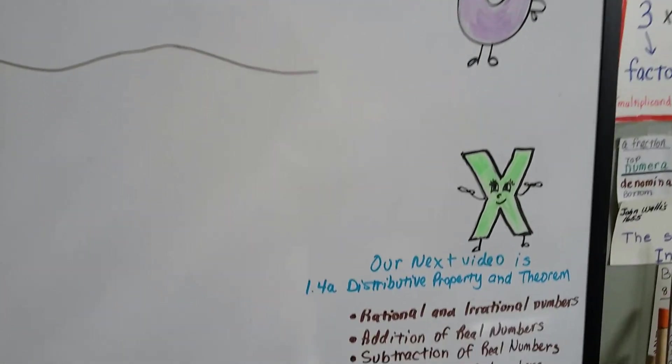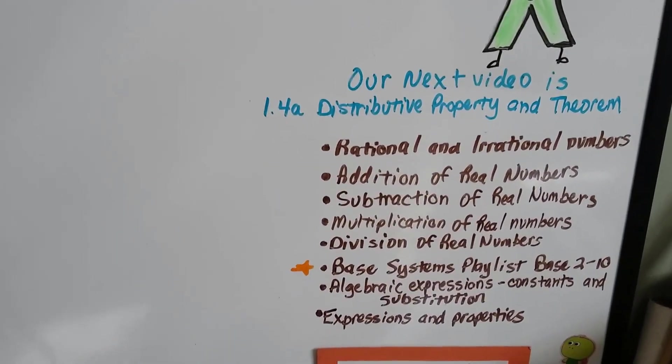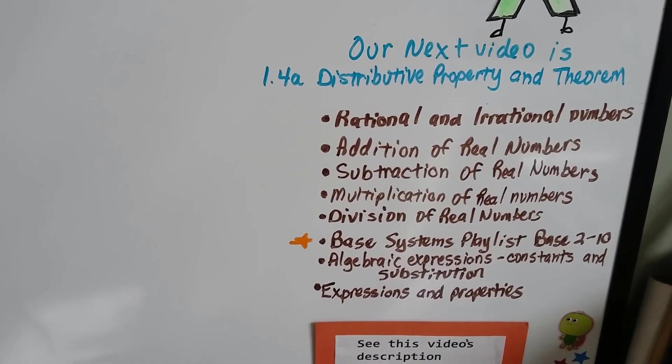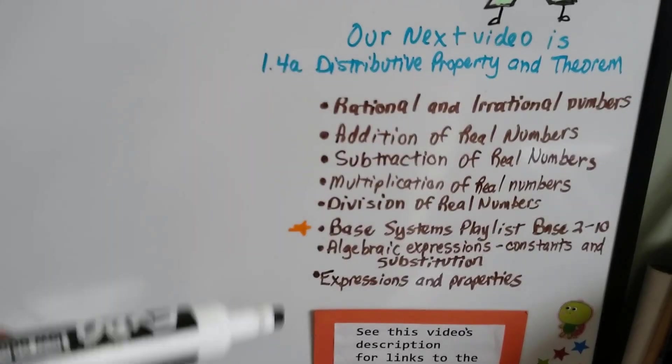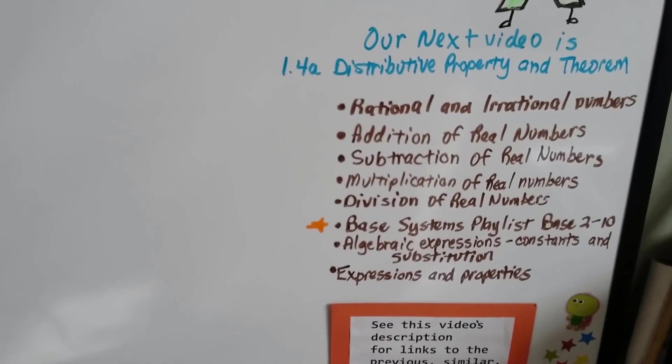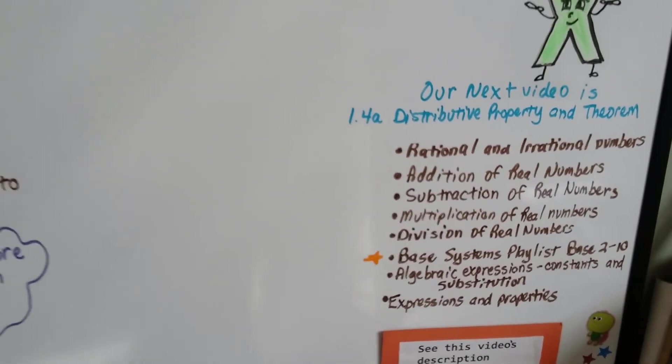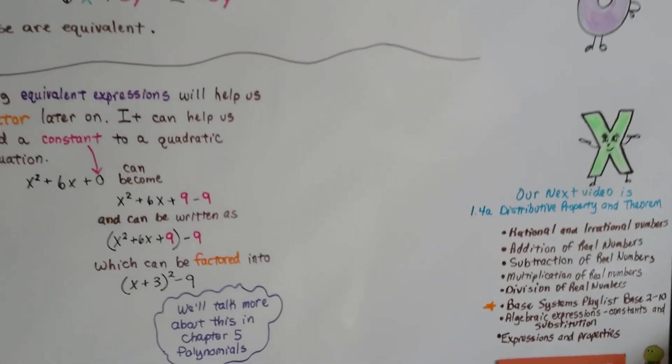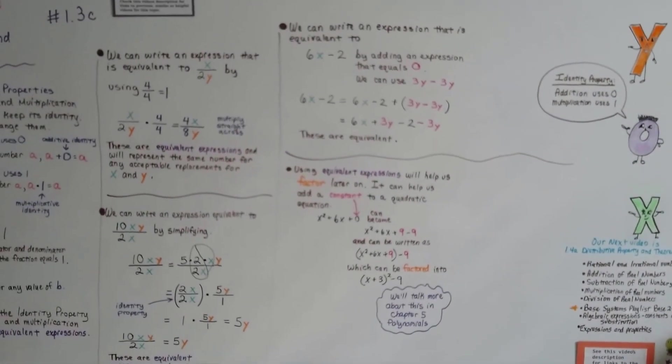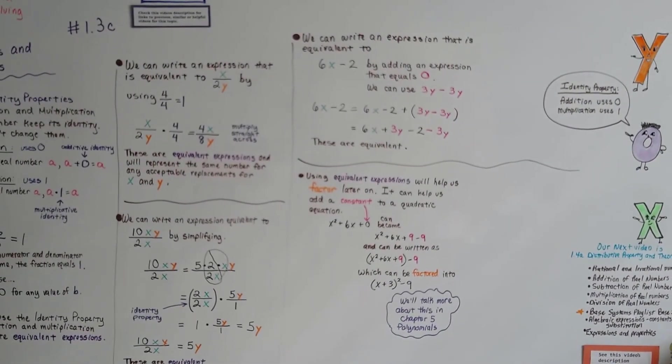Our next video, 1.4a, I'm going to talk about the distributive property and multiplication, and we have a theorem. If you want to link to any of the previous videos for Chapter 1 that you've missed, or if you want to review, you can just click on this description and go right to it. So I made it easy for you. We're going to continue on, talk about distributive property, and I hope I'll see you there. Bye.